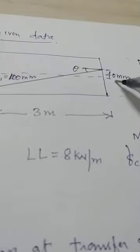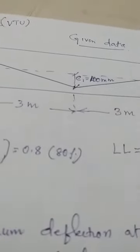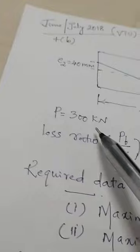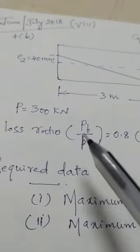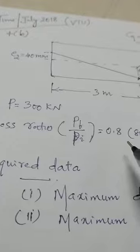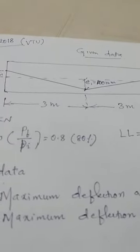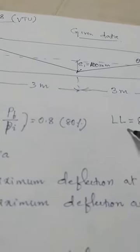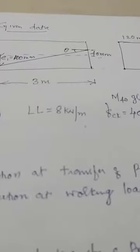In the third problem, a triangular cable is given. The eccentricity at the ends e2 = 40 mm and at the center e1 = 100 mm. The total span is 3 + 3 = 6 m. The prestressing force is 300 kN. The loss ratio pf/pi is directly given as 0.8 — note this is not a percentage loss but the loss ratio directly. Live load is 8 kN/m and fck = 40 N/mm² (M40 grade), so Young's modulus must be calculated using E = 5700√fck.